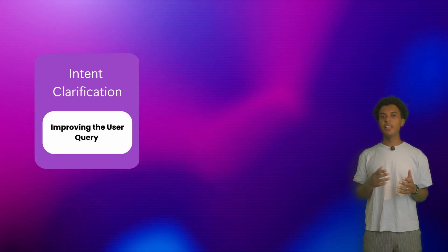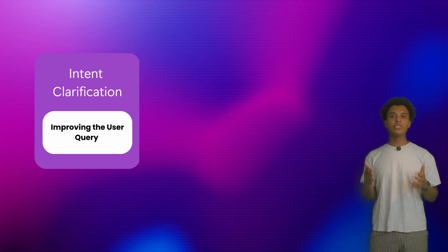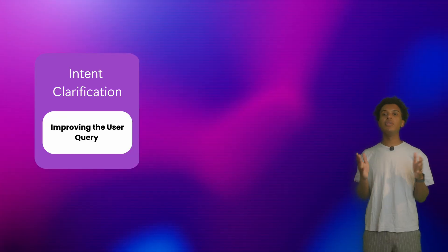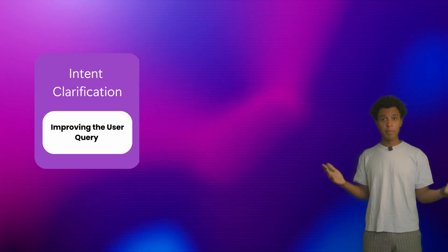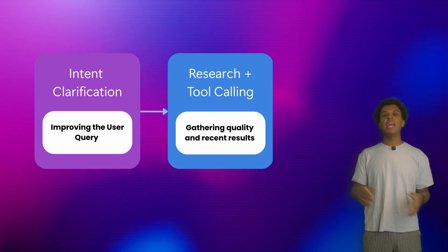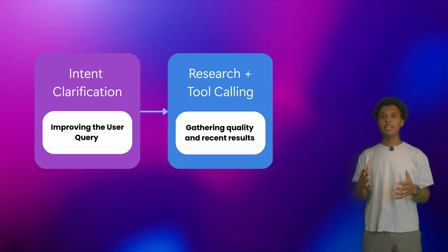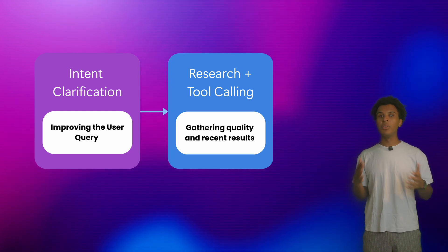Let's take a look at how the Foundry deep research agent actually works. To start out, the agent does some intent clarification — this is like when search engines ask 'did you really mean this?' This is done by using an LLM before any actual research gets done, to make the original query better. Then the agent conducts the search using a tool like grounding with Bing search, which brings a curated set of both recent and high quality sources for a good blend of research.